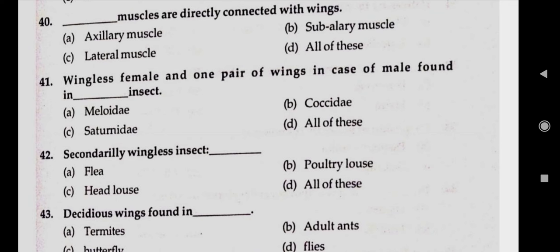Question number forty-one: wingless female and one pair of wings in case of male found in which insect. Answer B, coccidae. Question number forty-two: secondary wingless insects. Answer D, all of these — fleas, body louse, head louse.